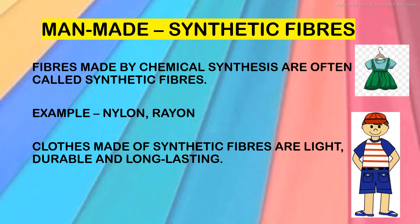Next is man-made fibers, also called synthetic fibers. Fibers made by chemical synthesis are called synthetic fibers. Examples are nylon and rayon. Nowadays, most clothes are made up of synthetic fibers because they are light, durable, and long-lasting.